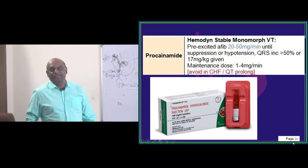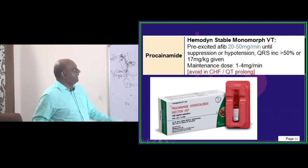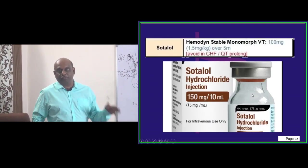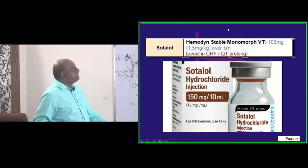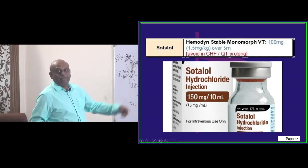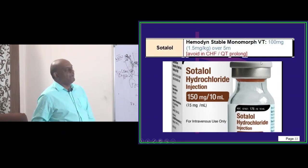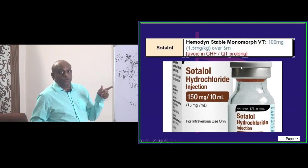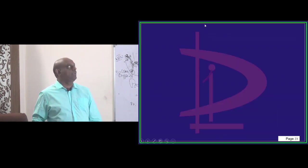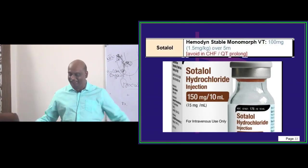So procainamide. Then sotalol, the potassium channel it acts on. It is given in a monomorphic VT, 100 milligrams. So you get 150 milligram per 10 ml like this. So 1.5 mg per kg over a period of 5 minutes. And if there is a CHF or QT prolongation just like procainamide, it is also a contraindication for sotalol is what you need to remember.